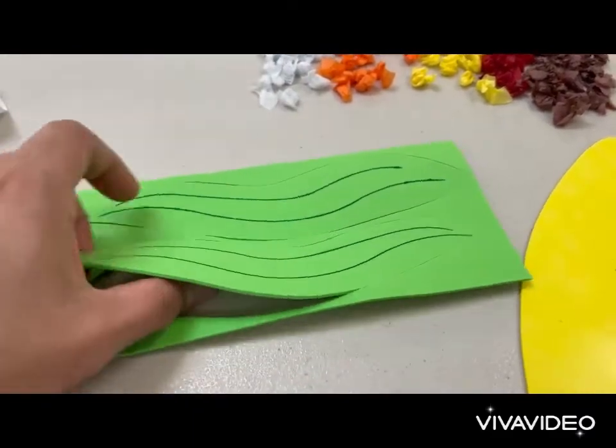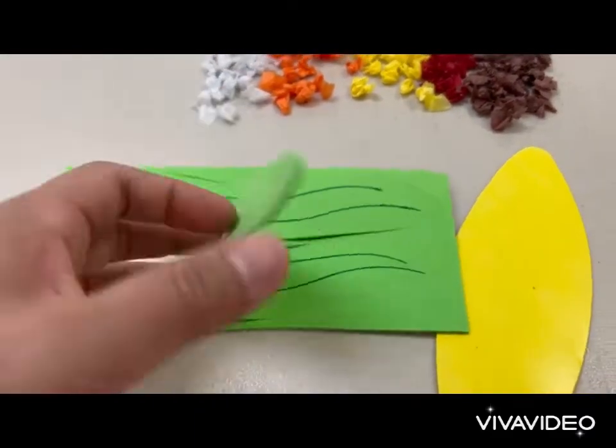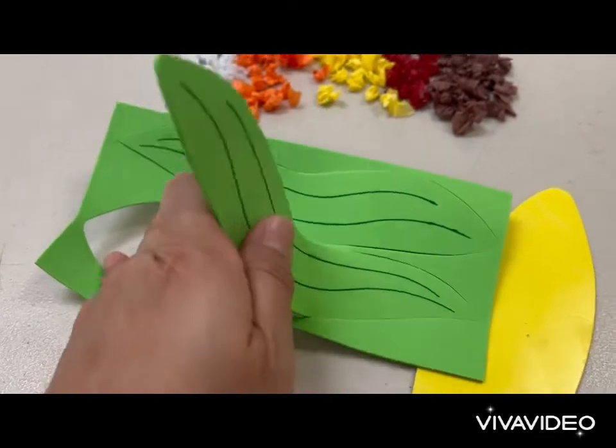Place the two leaves at the bottom of the foam corn as shown.